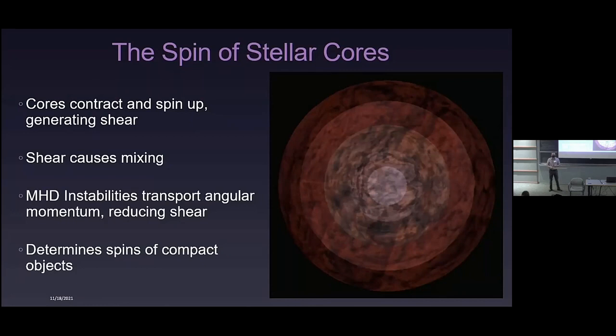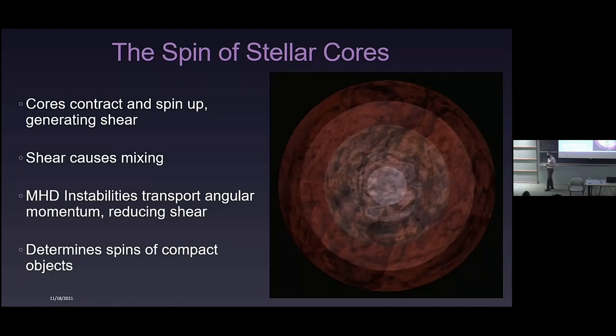That shear can do interesting things — it can cause mixing, which we heard about yesterday from Corinne and Isabelle. It can also generate instabilities, hydrodynamic or MHD instabilities, which then feed off that shear and force a torque to reduce the shear and bring the star closer to rigid rotation.